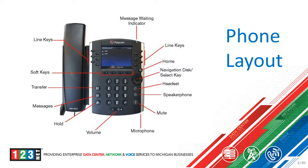Above that is your messages button, or voicemail button — you will press this to access your voicemail. Above that is your transfer button; when you are on a call and you wish to transfer that call to another user, you will press that button to initiate the transfer feature, then follow the steps to complete the transfer. Above that you have soft keys — these are physical buttons pertaining to options on the screen while on or off a call.